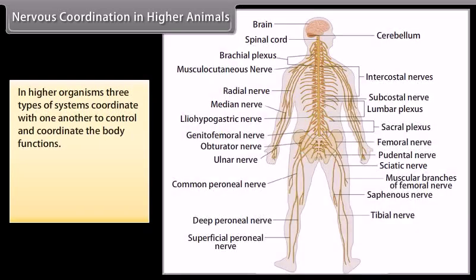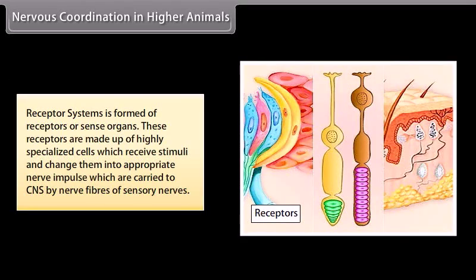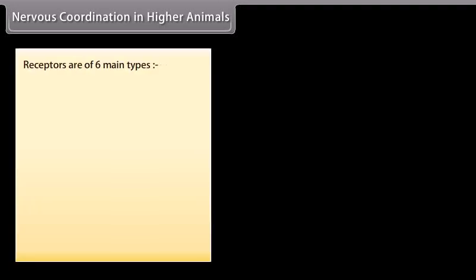In higher organisms, three types of systems coordinate with one another to control and coordinate body functions: the receptor system, the nervous system, and the effector system. The receptor system is formed of receptors or sense organs — highly specialized cells which receive stimuli and change them into appropriate nerve impulses, which are carried to the CNS by nerve fibers of sensory nerves. Receptors are of six main types.